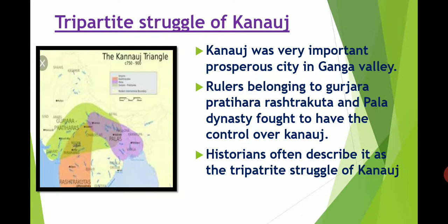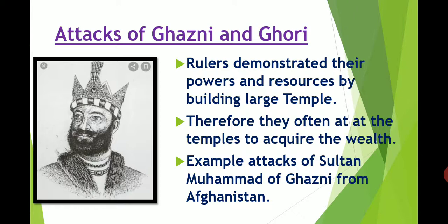This is one example of why wars were happening in the previous period. Rulers demonstrated their power and resources by building large temples. In those periods, kings used to build huge, large temples to show their wealth. There was immense wealth in those temples. Therefore, those temples were often attacked by invaders who wanted to acquire that wealth.